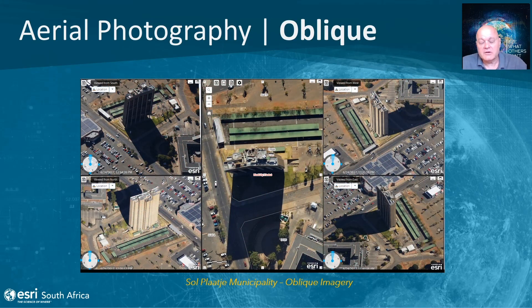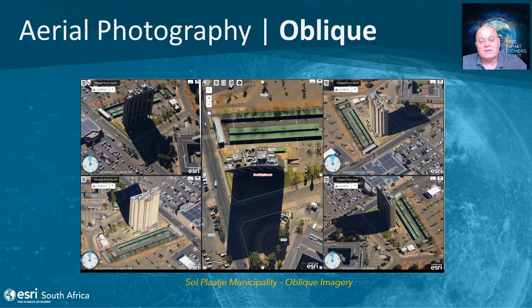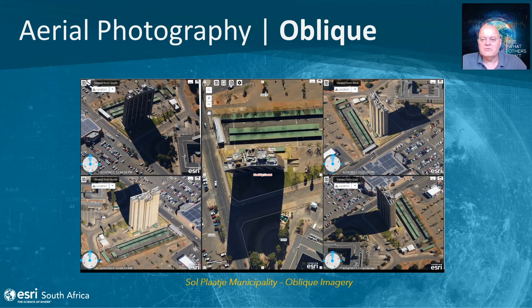The concept of oblique or high-incidence angle imagery can be captured using a cone camera — a camera with a nadir downward-looking image and images taken from the left, right, front, and back. This imagery from Sol Plaatje Municipality, or Kimberley, lets you see all four sides of a building, understand its construction, measure heights, and assess its condition. This could be used for property valuations and gives a unique capability for day-to-day decision-making.